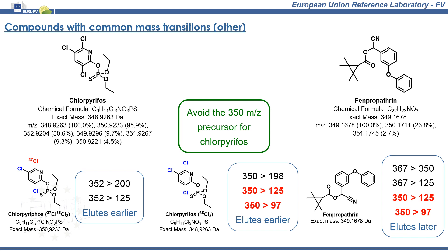And now, let's end with four pairs found within regular routine laboratory work. The first pair is chlorpyrifos-methyl and fenpropathrin. Remember to avoid the m/z 350 precursor ion in the case of chlorpyrifos-methyl and to use the chlorpyrifos-methyl isotopologue with 2 Cl-35 atoms and 1 Cl-37 isotope.